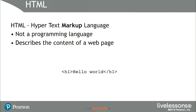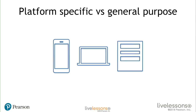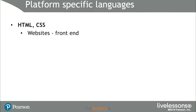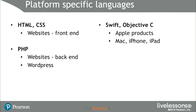What about HTML? It's actually not a programming language — it stands for HyperText Markup Language. The 'markup language' part means it's how to display content, not run line by line telling something what to do. HTML is used to display content on a web page, so this line 'h1 hello world' is saying the main heading text will have the words 'hello world' in it. There are also platform-specific languages: HTML and CSS are markup languages for website front ends, PHP is for website back ends, and Swift and Objective-C are used on Apple products like Mac, iPhone, and iPad.